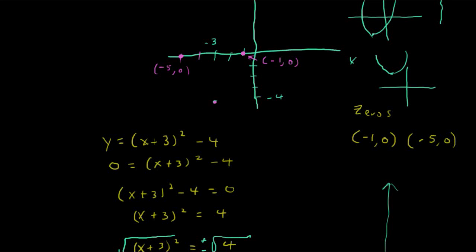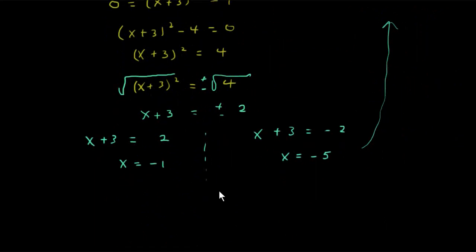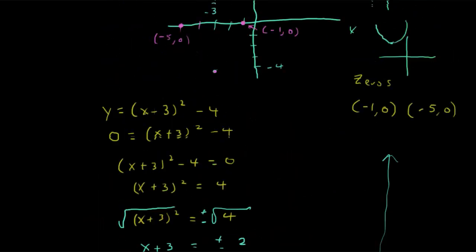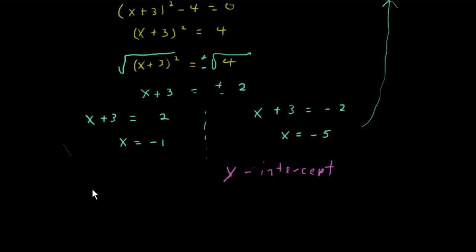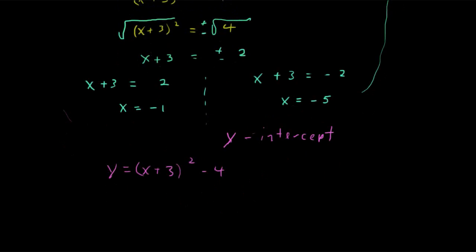It would be nice to have maybe another couple of other points. One point we might be able to come up with is the y-intercept. That is where the parabola crosses the y-axis. So let's go back up and take a look at what we've got so far. So we want to know where is our parabola going to cross the y-axis. Well, what would the value of x have to be there? It would have to be 0 when the parabola crosses the y-axis. So let's rewrite our equation again. We have y equals x plus 3 squared minus 4. And go ahead and put it on pause and see what you come up with for the y-intercept.